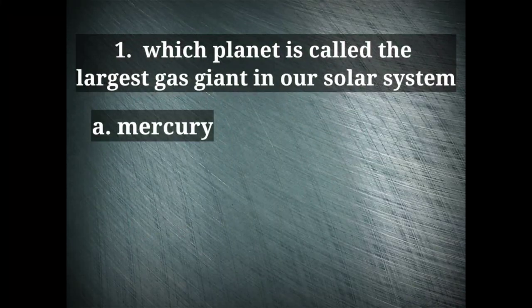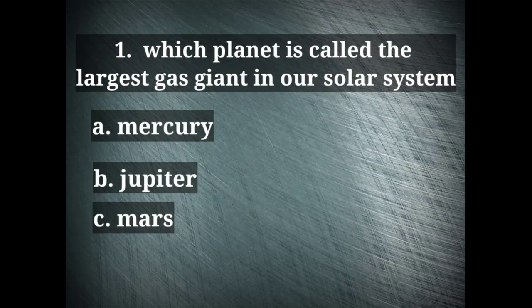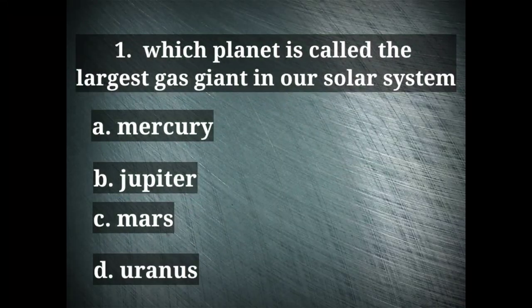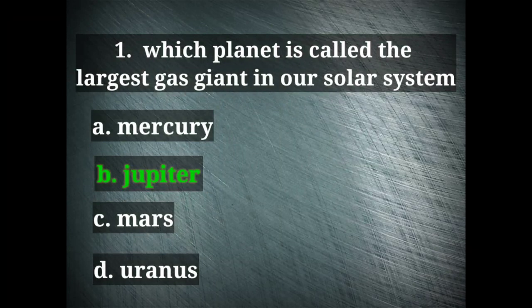Which planet is called the largest gas giant in our solar system? Options are Mercury, Jupiter, Mars, and Uranus. Jupiter is the largest gas giant. That is also the largest planet in our solar system.